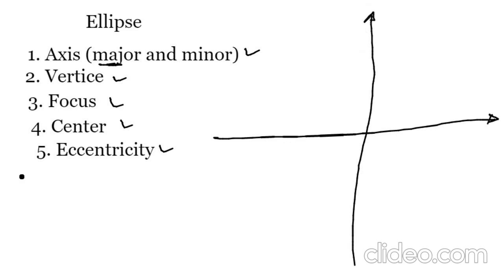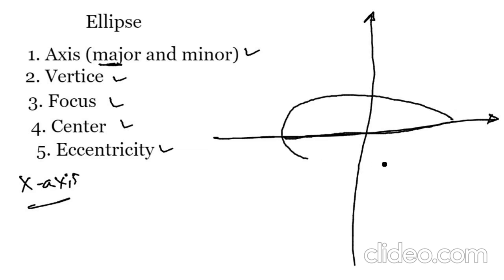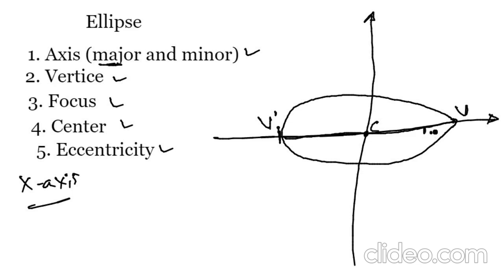The horizontal axis is on the left side. We have the central point, vertex V and V prime, and focus F and F prime along the axes.